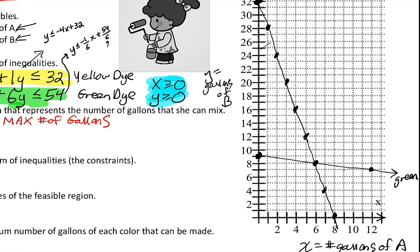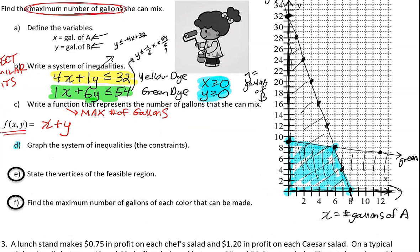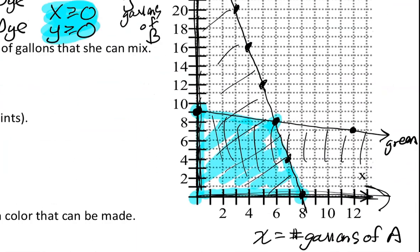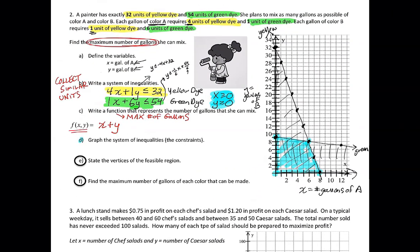Both constraints are less than or equal to, so we shade the appropriate regions. You can see where they overlap. We're bounded by the axes because we need a positive number of gallons of paint. Our feasible region is right here — everything in this region. The graph is finished. As a try-this, state the vertices of the feasible region, then find the maximum number of gallons of each color that could be made.